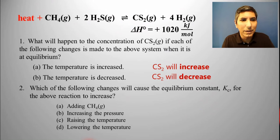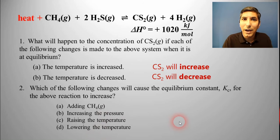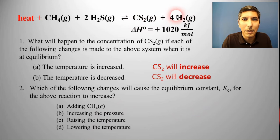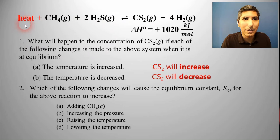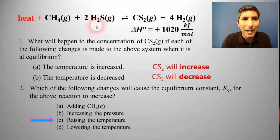Here's another question: which of the following changes is going to cause the actual equilibrium constant KC for that above reaction to increase? If I want to cause the equilibrium constant to increase, I need to increase the amount of products I'm making. The only reactant that's going to change the equilibrium constant is adding heat — the same thing as increasing the temperature. So if I raise the temperature, I'm going to cause more CS2 and more H2 to form at the expense of the reactants, and the equilibrium constant goes up.